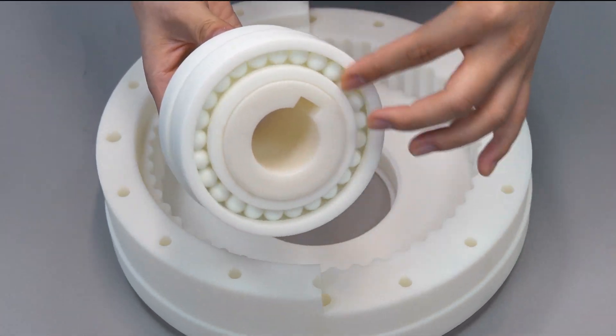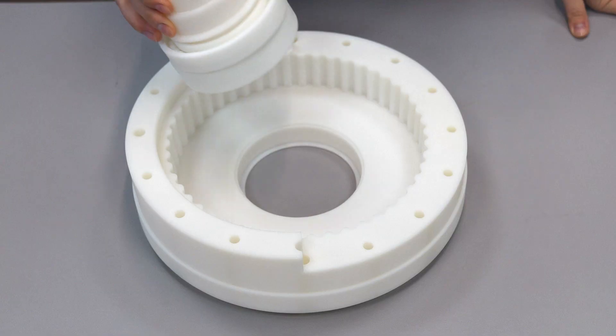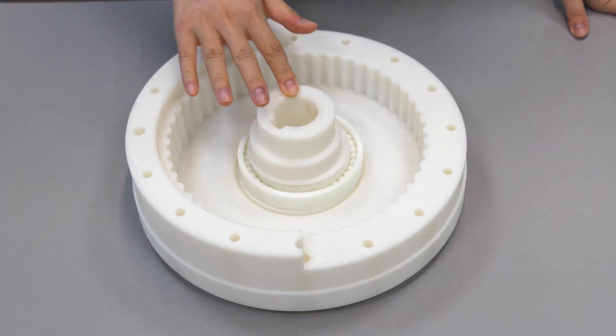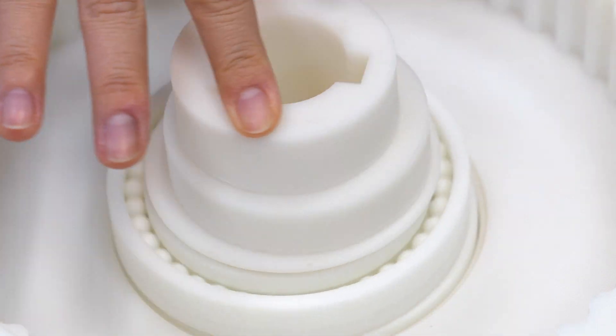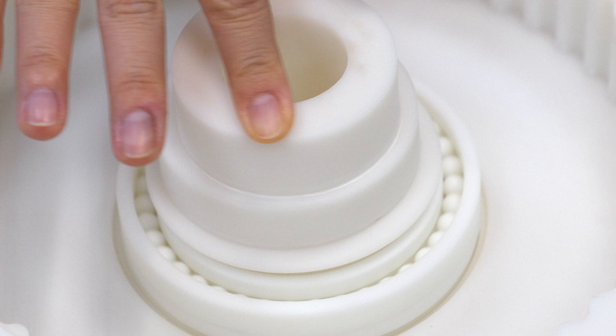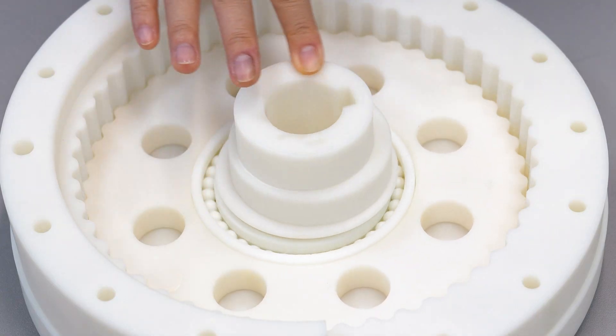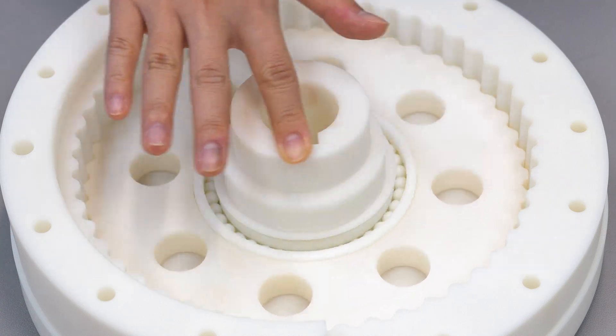The way force is delivered to the cycloidal disc is quite unique. The shaft doesn't directly rotate the disc, it uses bearings in between. Instead, this eccentric cam transforms the rotation into an off-center wobbling motion.